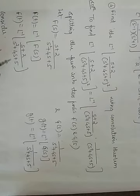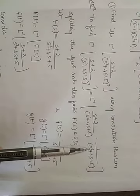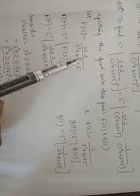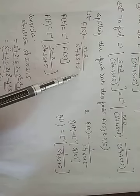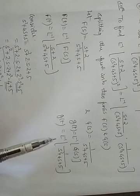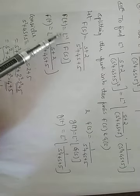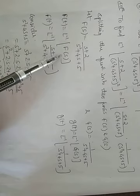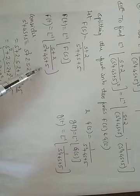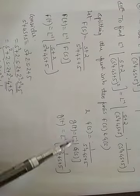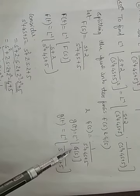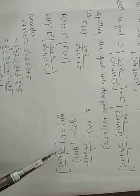Denote one function as f(s) and another as g(s). So f(s) is (s+2) upon (s²+4s+5), and g(s) is 1 upon (s²+4s+5). We need to find f(t) = L⁻¹{f(s)} and g(t) = L⁻¹{g(s)}.